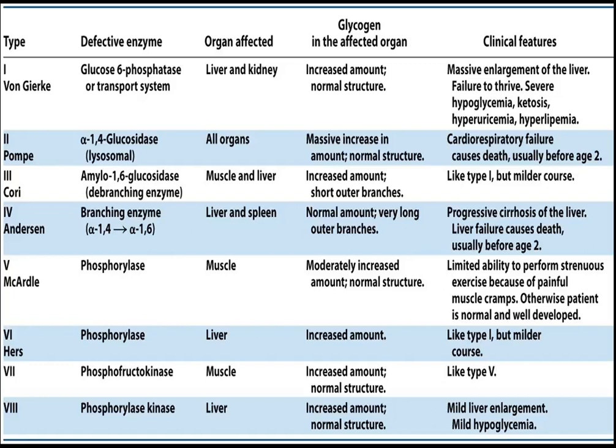Cori disease — the defective enzyme is amylo-1,6-glucosidase, also known as the debranching enzyme. Muscle and liver are affected. There is an increased amount with short outer branches. It is similar to Type 1 but presents with a milder course.